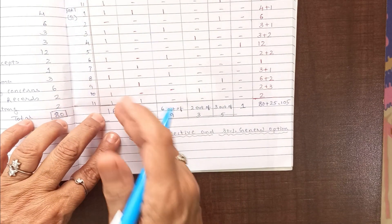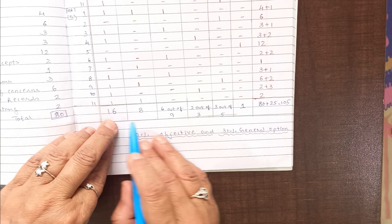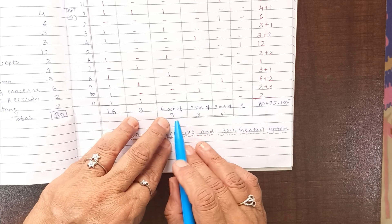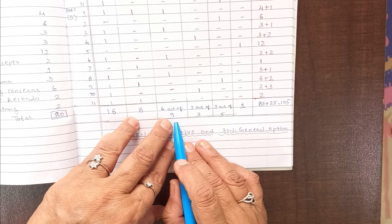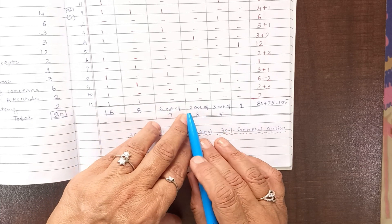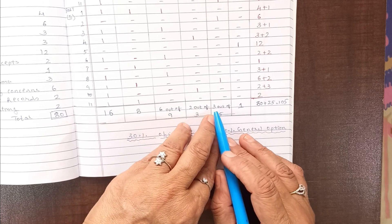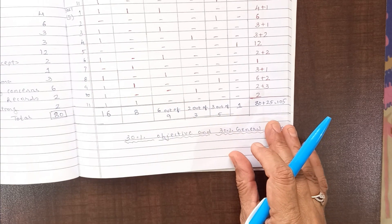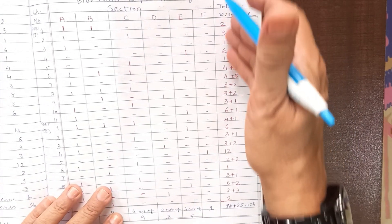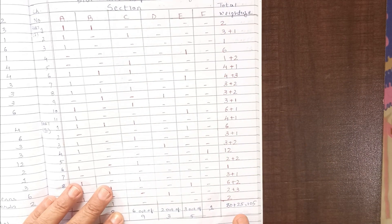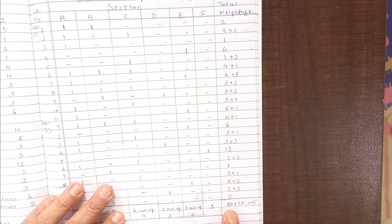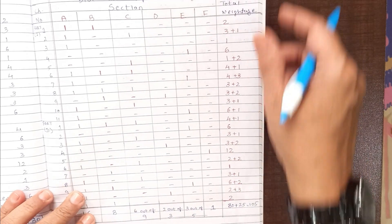If you total it up: A section gives 16 marks, B section gives 8 marks. For C section, you have to answer 6 questions out of 9 given. In D section, you have to attempt 2 out of 3 given. In E section, attempt 3 out of 5. F section has 1 question. The total is 80 marks plus a 25-mark general option, making the total paper 105 marks. You are required to answer for 80 marks, so you have 30% objective plus 30% general option.